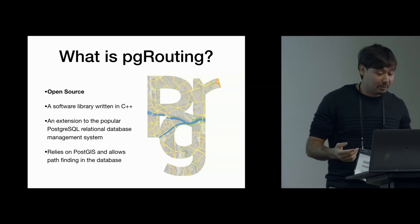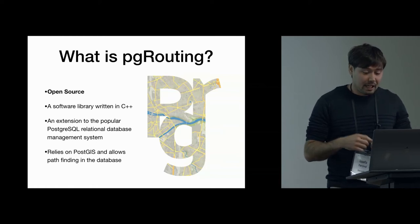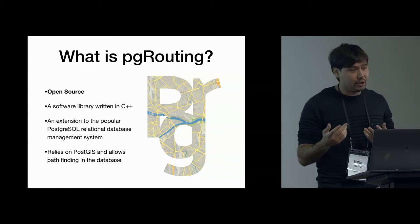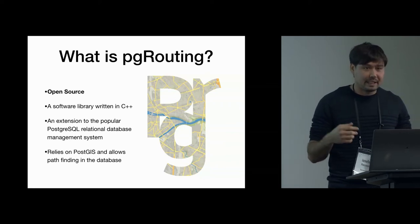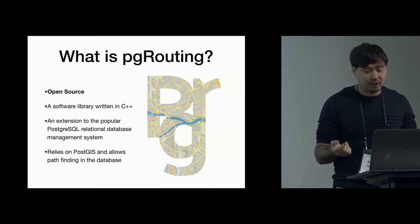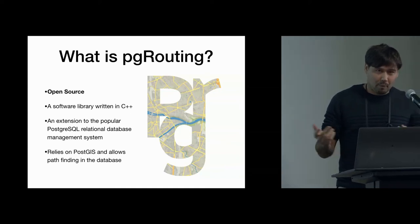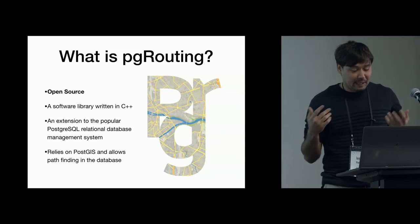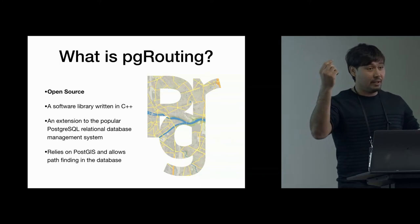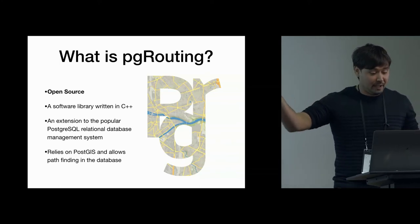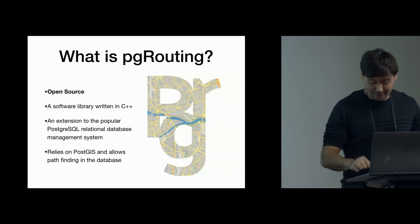PG routing is open source and provides navigation and pathfinding in the database, allowing developers and researchers to build network routing applications and perform analyses on graphs. It's an extension of the PostgreSQL relational database management system and heavily relies on PostGIS. Basically, it's a tool that allows you to find the shortest path from some point A on a graph to another point B. You can do this in PostgreSQL, geospatially. It's fast and fun — and you can do it with fish.